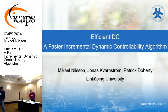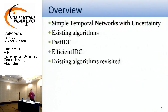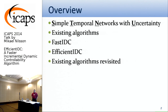So, an overview of this presentation. I will start with a short example of simple temporal networks and a scenario where they can be used. I will talk a bit about existing algorithms, and as we have heard, there's been some development this spring. I will specifically talk about the Fast IDC algorithm and our contribution in this paper, Efficient IDC. And then in the end, I will revisit the existing algorithms updated with the latest results.